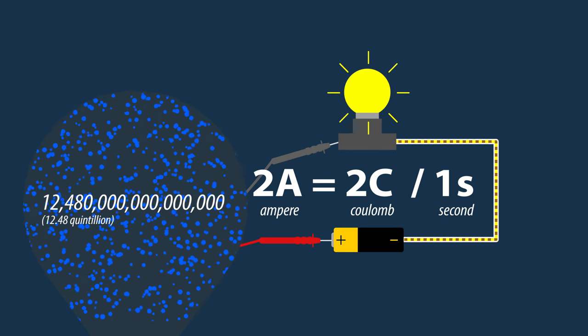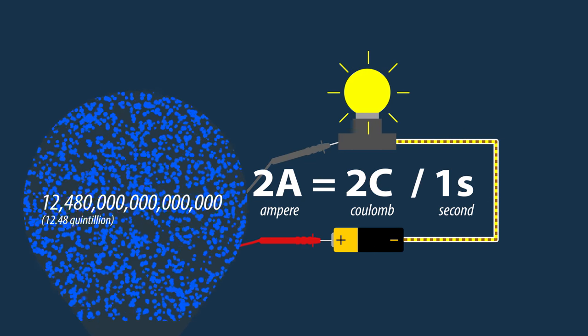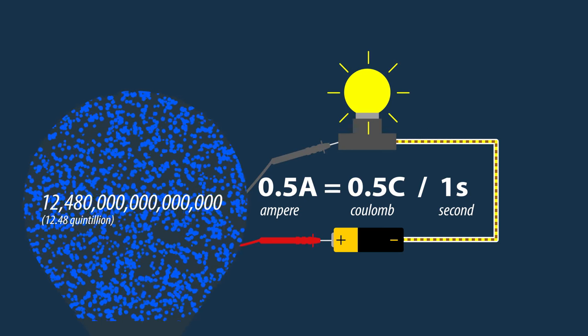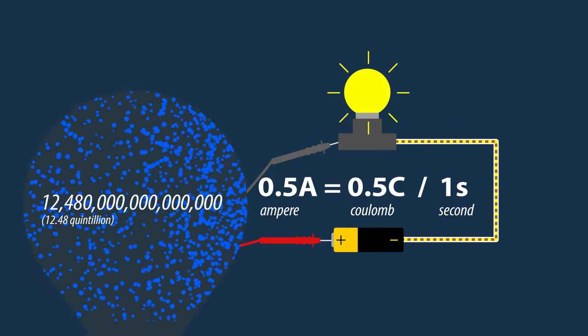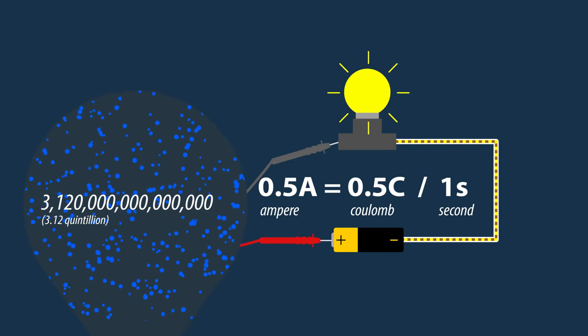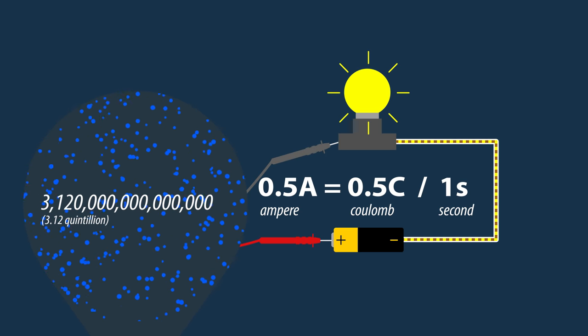2 amps is double that number of electrons flowing past every second. 0.5 amps, or 500 mA, is half that number of electrons per second. To put it into perspective,